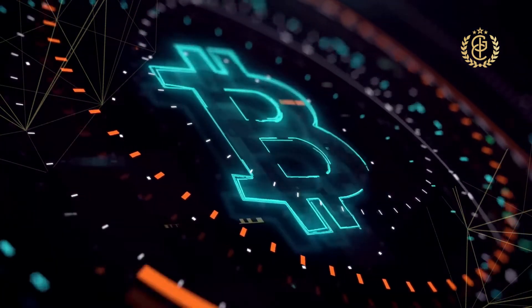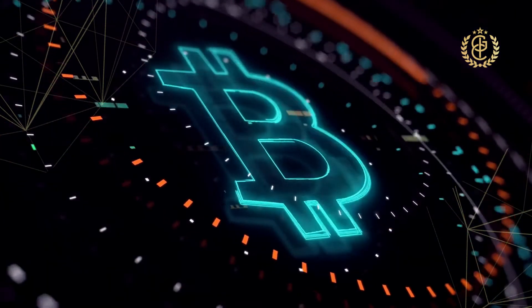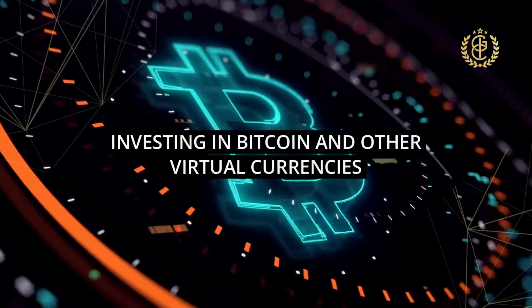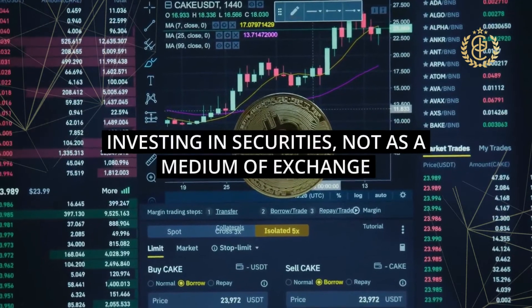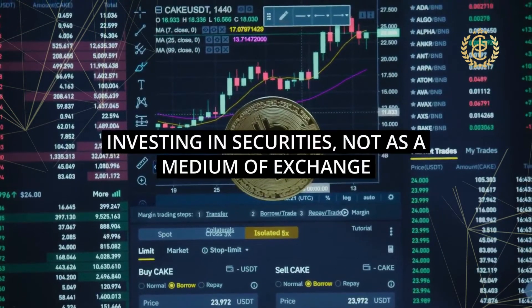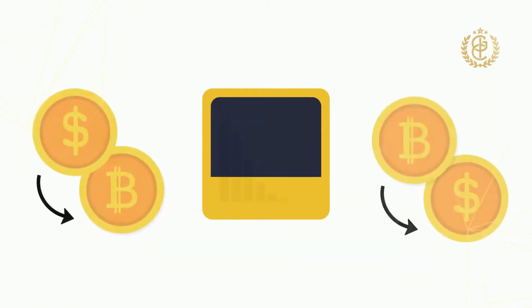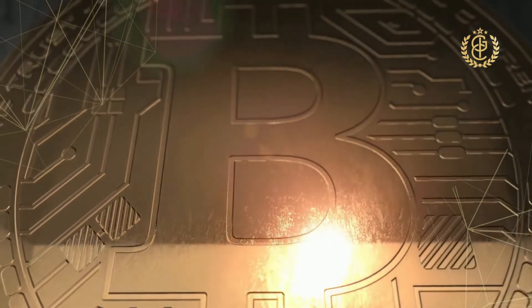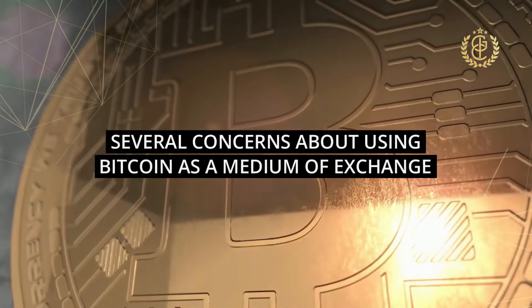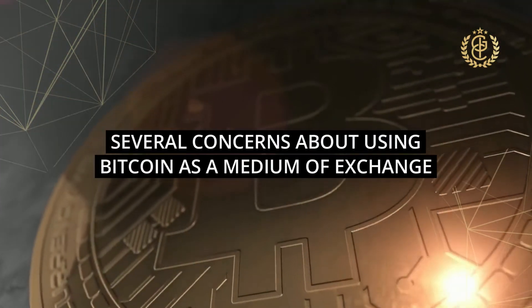Because of the trust in this protocol — presented by cryptographers, the media, and some billionaires — many people are now investing in Bitcoin and other virtual currencies. The investments so far largely take the form of investing in securities, not as a medium of exchange. People purchase Bitcoin using fiat, wait until the price goes up, then sell the virtual currency and convert it back into fiat.